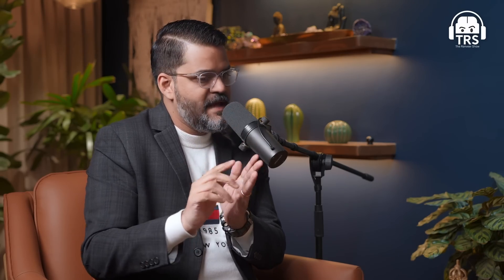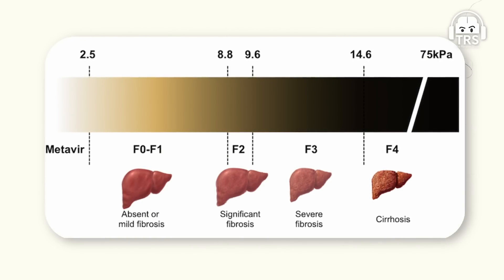When that scarring goes beyond a particular point, it is graded: F0 is no fibrosis, F1 and F2 is early fibrosis, F3 is advanced fibrosis, and F4 is what we call cirrhosis. Once it goes above F2, that becomes significant scarring and you have a high chance of developing cirrhosis. So this much is there to fatty liver.